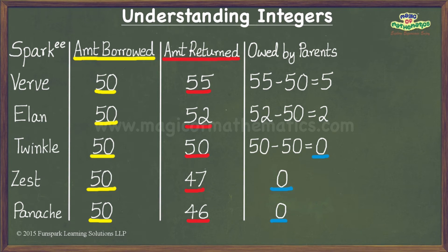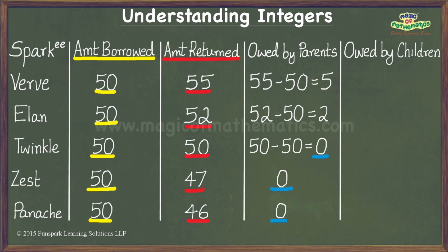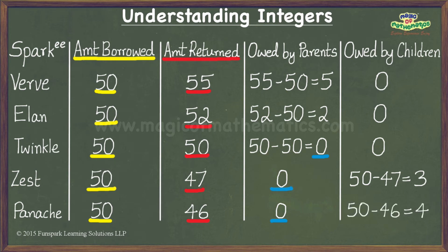Let us capture the information regarding what the children owe to their parents under a column labeled Owed by Children. It is clear that Verve, Elan, and Twinkle don't owe their parents anything. While Zest has to give his parents 50 minus 47 which is equal to 3 sparks to take care of the shortfall, and Panache owes her parents 4 sparks. We now have two columns — Owed by Children and Owed by Parents — giving us three possible cases: parents owe children money (Verve and Elan), children owe parents money (Zest and Panache), or neither owes anything (Twinkle).